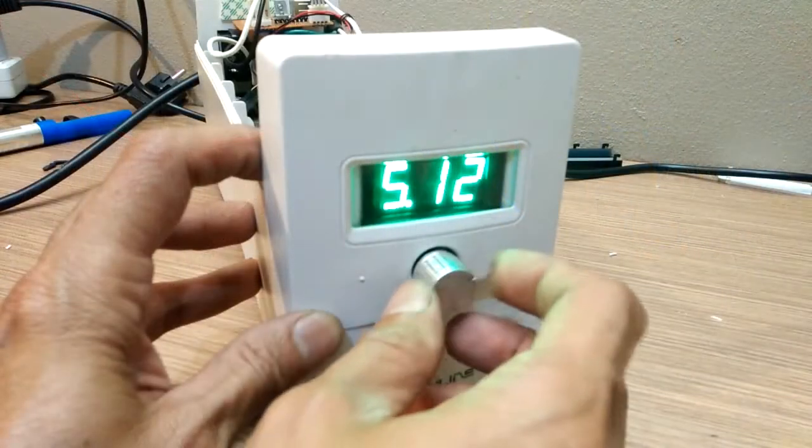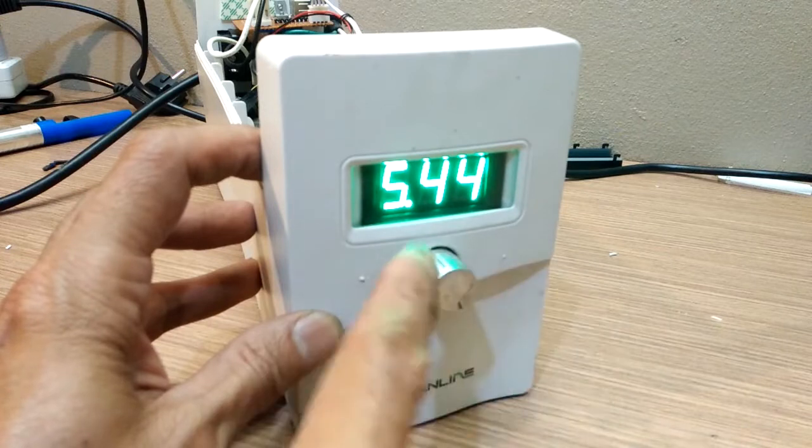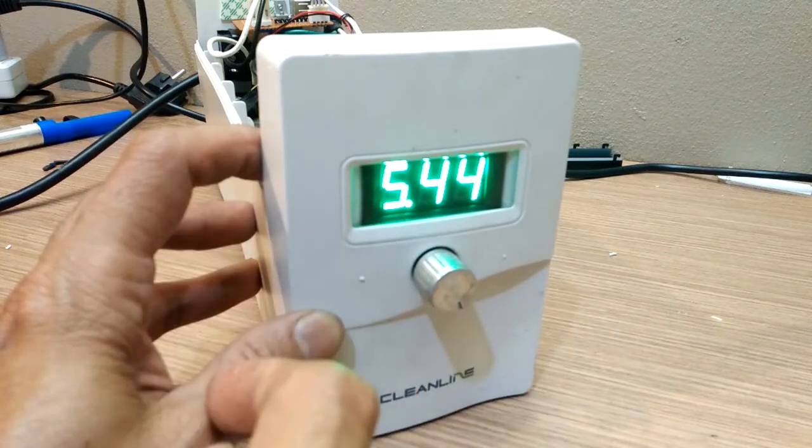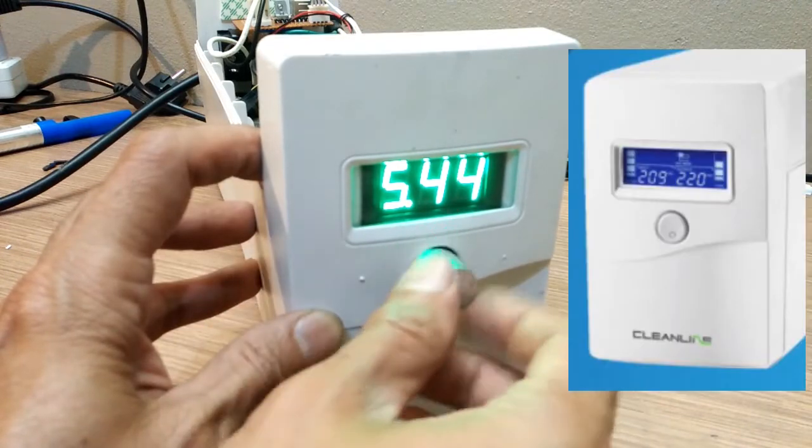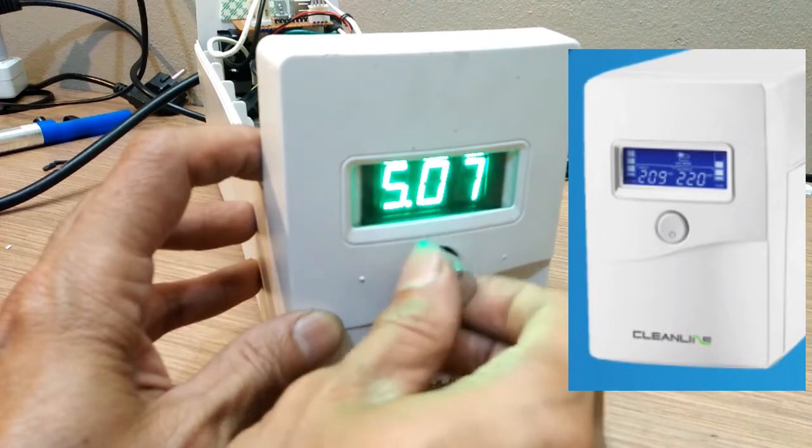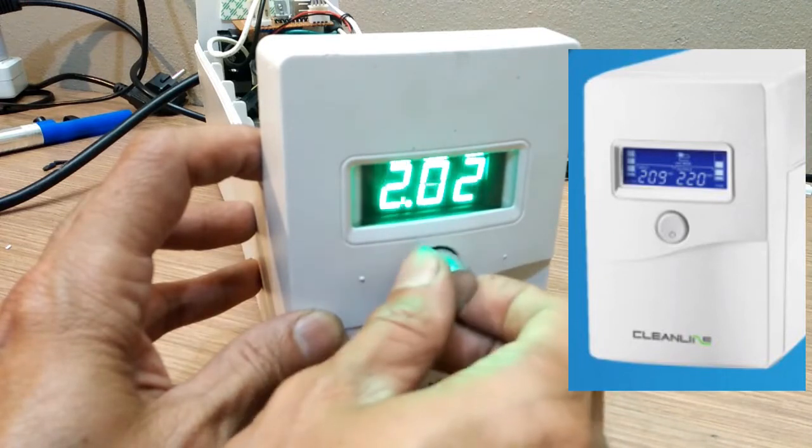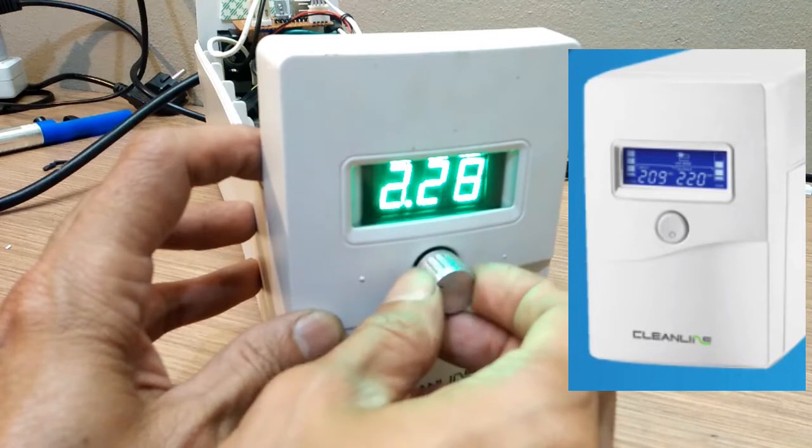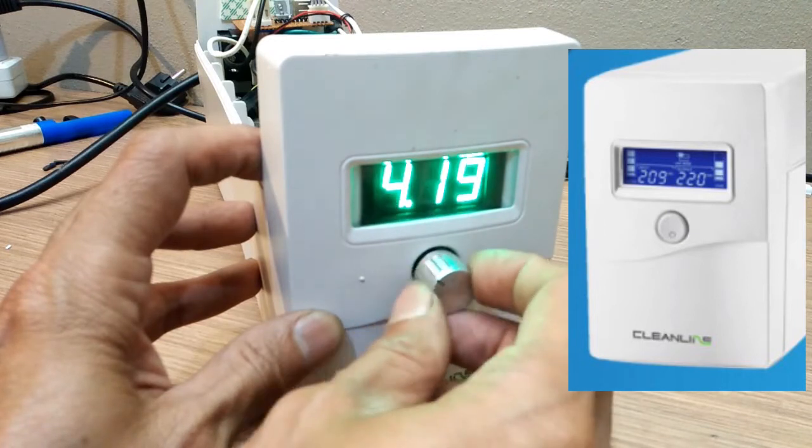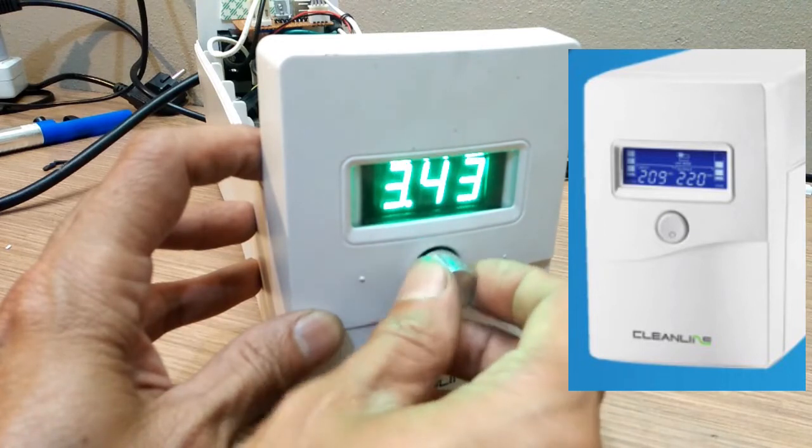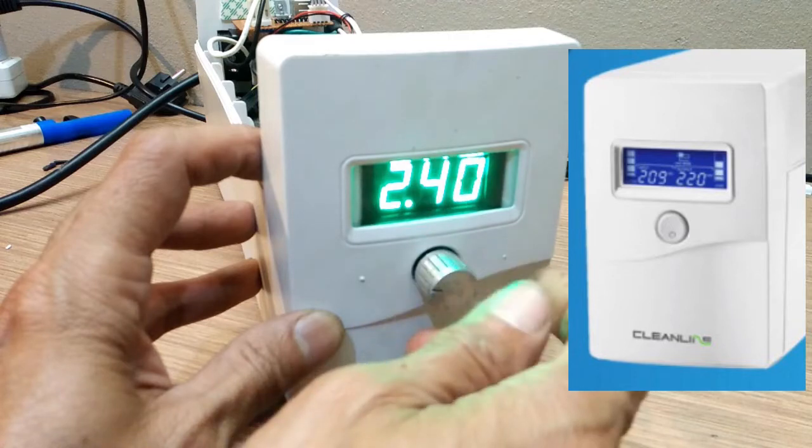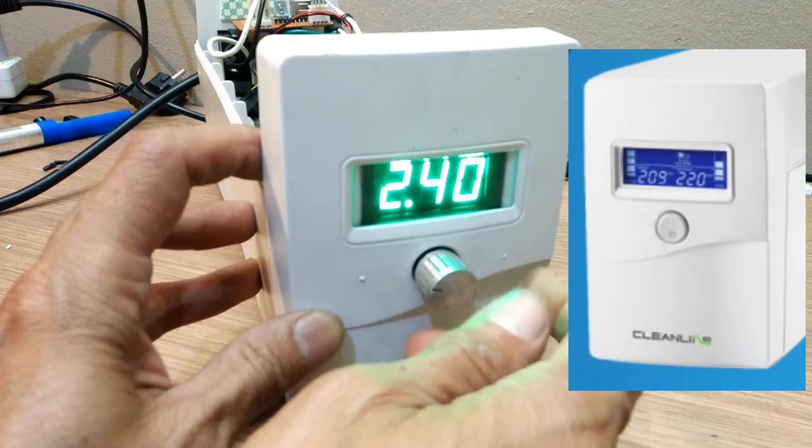The potentiometer in the front panel enables us to adjust the output voltage from about 1.2 volts up to the maximum voltage. The maximum output voltage of this power supply can be adjusted through the trimmer resistor in the DC to DC module inside. That hole in the front panel where I put the potentiometer is where the original push button switch of the UPS is located.